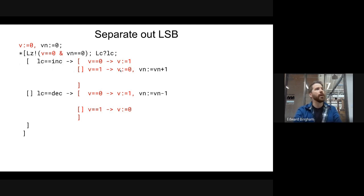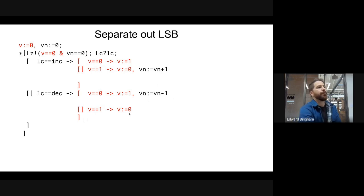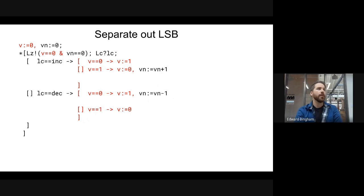If V is one, we set V to zero and propagate that increment to the rest of the counter: Vn equals Vn plus one. For decrement: if V is zero, we set V to one and propagate the decrement out to the rest of the counter. If V is one, we set V to zero and do not propagate. So now for more than half of the increment or decrement commands, we only interact with the least significant bit. Statistically, we generally increment, decrement, increment, decrement — we don't get past that first bit often.